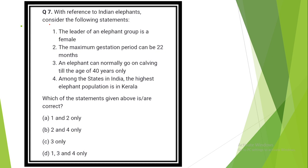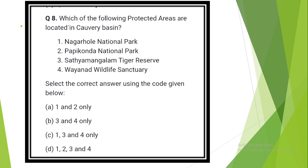With reference to Indian elephant, consider the following statements. The answer is option A: 1 and 2. The leader of an elephant group is a female. Maximum gestation period can be 22 months. Which of the following protected areas are located in Kaviri Basin? Option C: Nagarhole National Park, Satyamangala Tiger Reserve, Wayanad Wildlife Sanctuary.